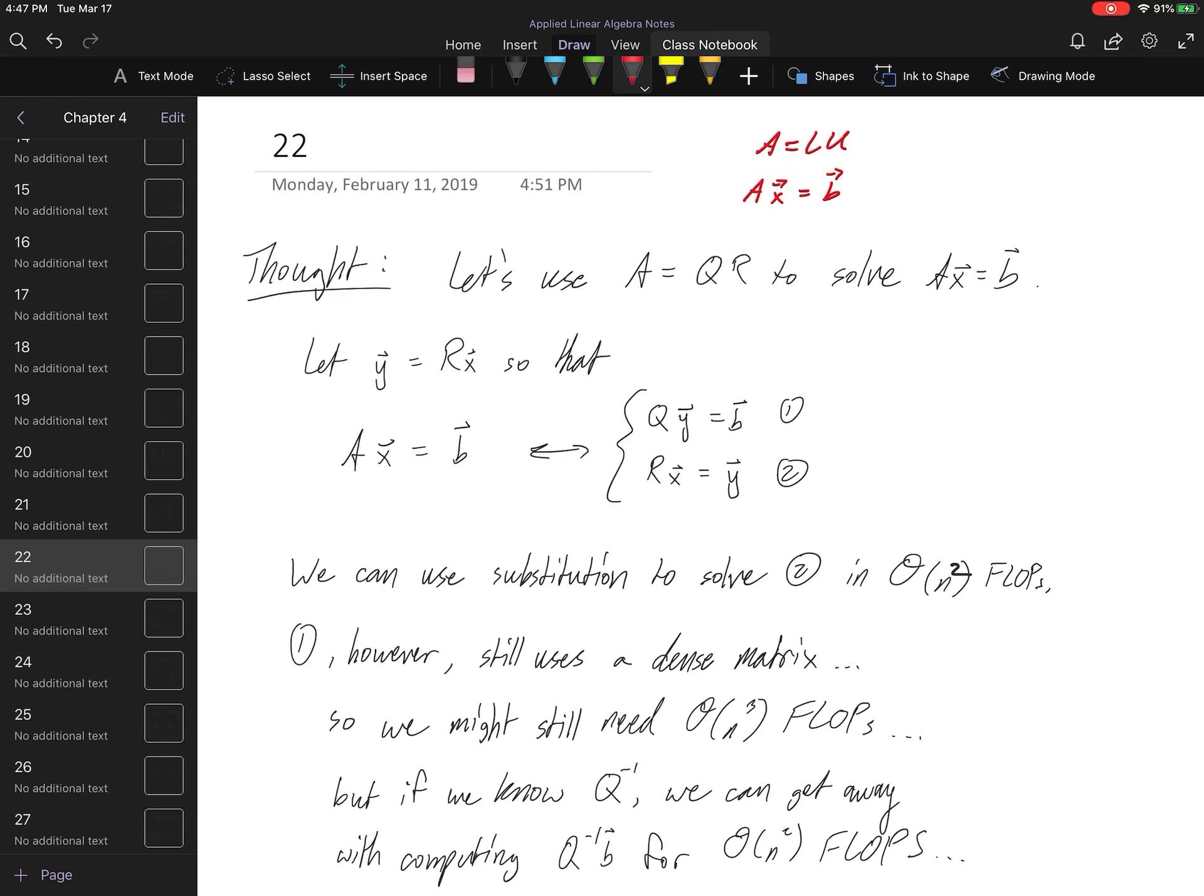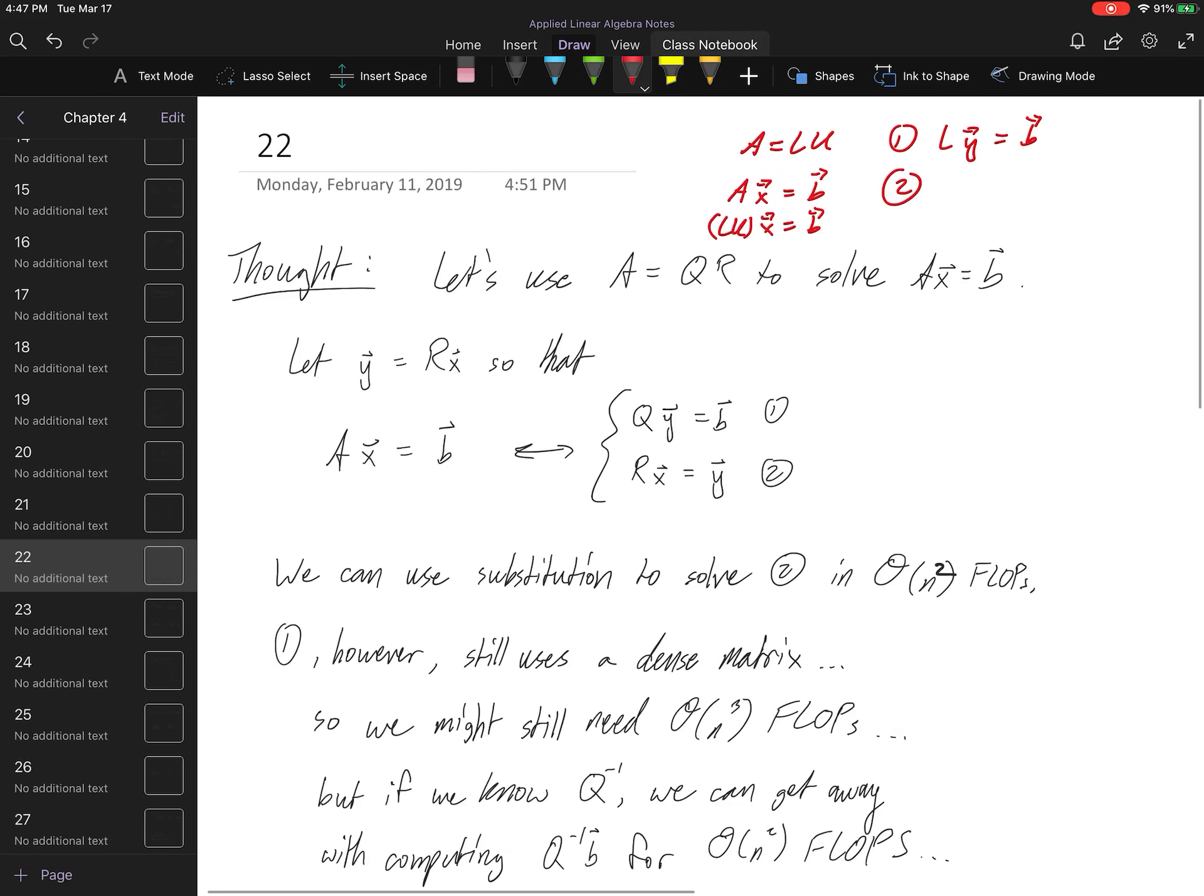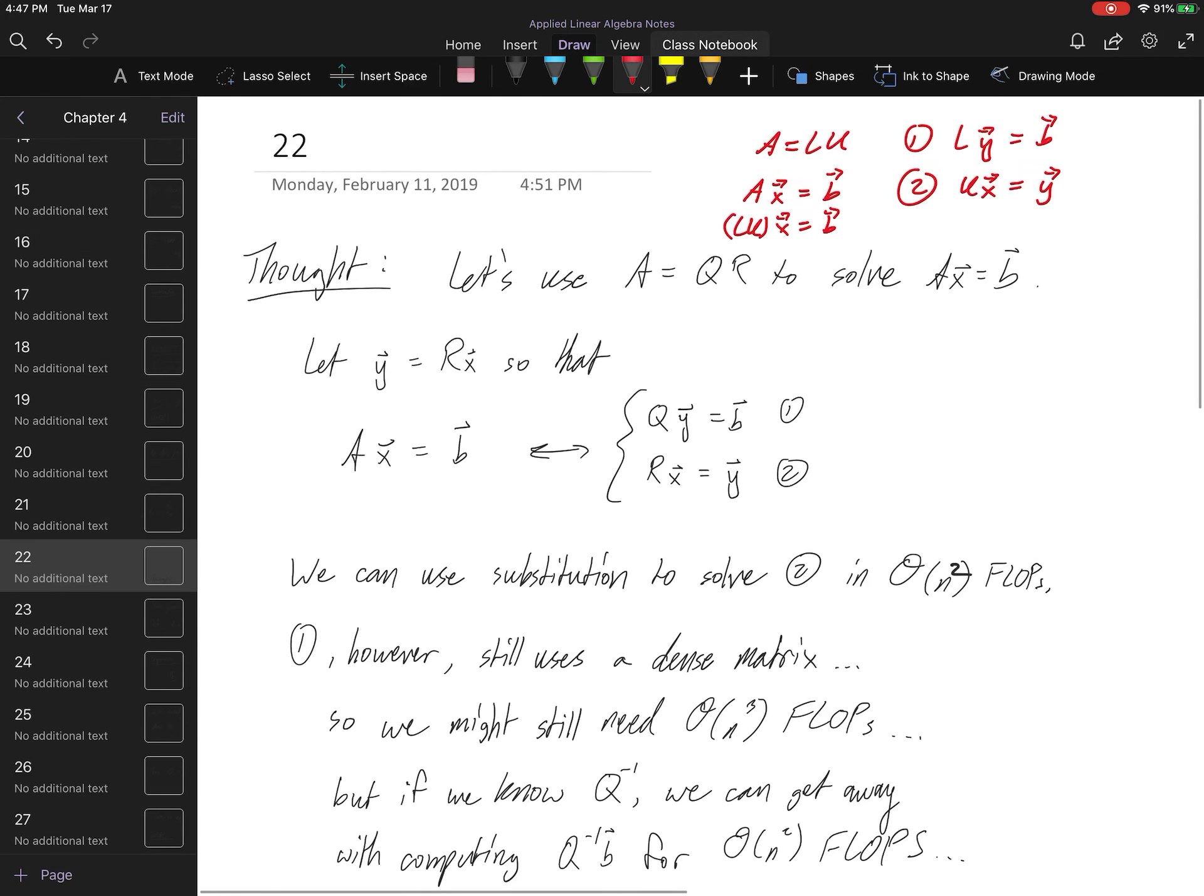Remember that if we had an LU factorization, then we could solve this system, Ax equals B in two steps. First would be to recognize that this is really me solving two different systems. The first one being the forward substitution system. Right? That would be the L times Y equals B system. And then saying, oh, hey, I can go ahead and now solve a back substitution system, right? An upper triangular system, UX equals Y.